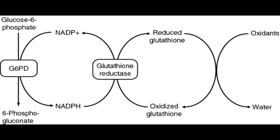Describe the lab findings associated with G6PD deficiency. The lab findings seen with G6PD deficiency will show red blood cells with Heinz bodies. Heinz bodies are denatured hemoglobin. When there is denatured hemoglobin inside red blood cells, the macrophages will recognize it and will try to remove it by taking a bite off the cell. Therefore, in G6PD deficiency, you see bite cells.